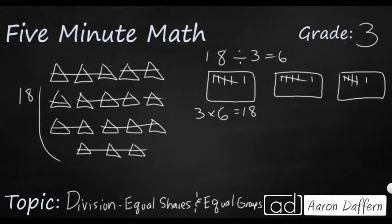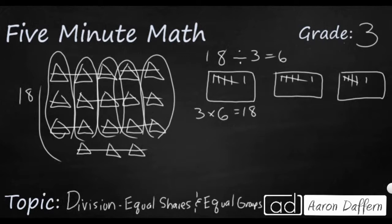So sometimes you can write this as a multiplication sentence and look for a missing factor. Another way to do this would be to simply just circle sets of three. So let's say I've got one, two, three, four, five. There we go. Those are my six sets of three. So there's different ways you can solve this.